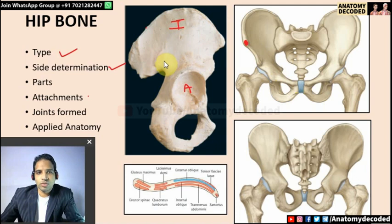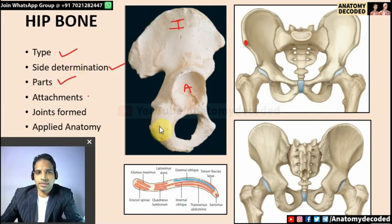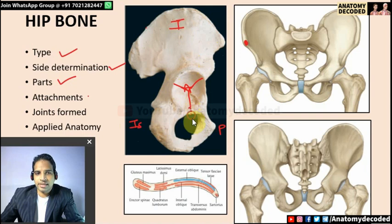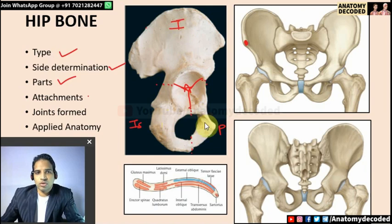This hip bone is of the right side, viewed from the lateral aspect. The three basic parts are: ilium, ischium, and pubis. These three parts are divided by a tri-radiate cartilage present near the acetabulum. The largest part is ilium, then ischium, and the smallest part is pubis.